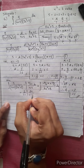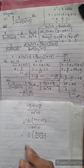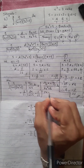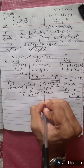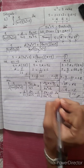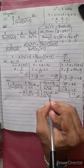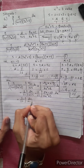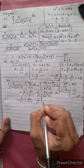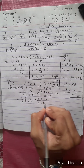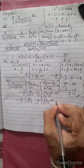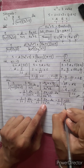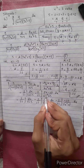Now we integrate. We have 1 by 11 times integration of dx divided by (x plus 5), plus minus 1 by 11 times integration of (2x minus 10) divided by (2x squared plus 5) dx. Using the formula: integration of f'(x) over f(x) equals log f(x), we solve each term.